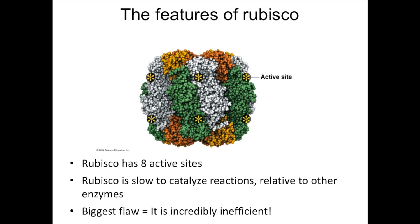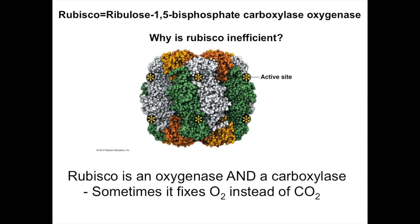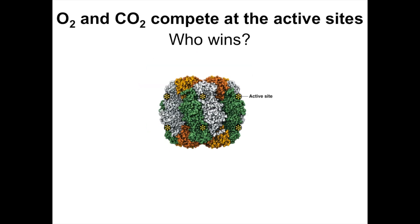Today we'll talk about rubisco's biggest flaw and how that leads to incredibly inefficient photosynthesis. So why is rubisco so inefficient? Looking at the name — ribulose 1,5-biphosphate carboxylase oxygenase — the two key aspects are carboxylase and oxygenase. What that means is that rubisco can be multifunctional: it can fix CO2 and act as a carboxylase, but it can also fix oxygen and act as an oxygenase. Whether it acts as a carboxylase or oxygenase depends heavily on the type of environment the plant is in.